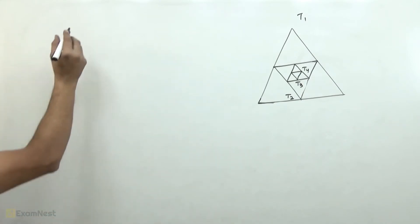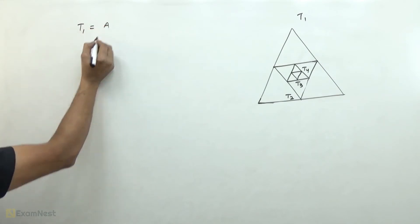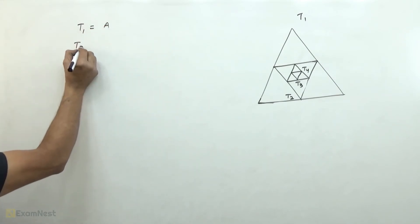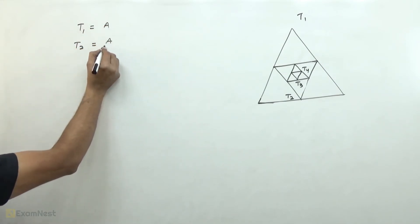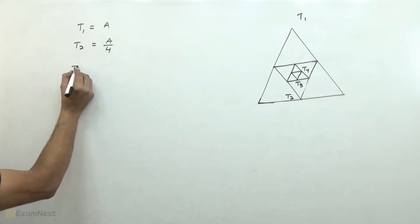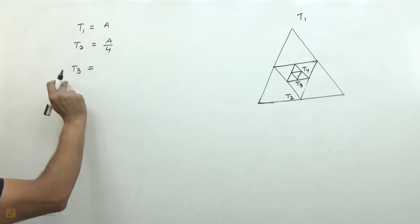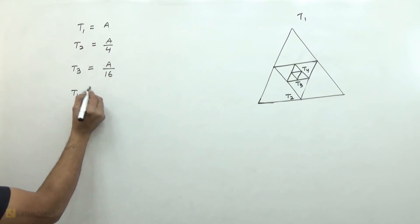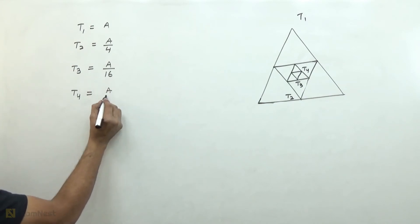The biggest triangle is T1. If we consider its area as A, then T2 is one fourth of A. T3 is one fourth of T2, that is A over 16. T4 is one fourth of T3, that is A over 64, and so on.